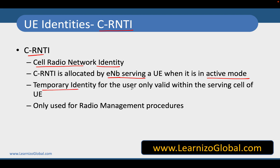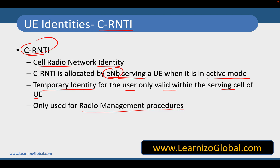C-RNTI is a temporary identity for the user, valid only within the serving cell of the UE. This identity is used for all radio management procedures. It is allocated by the serving eNodeB, and as soon as you move to idle mode, this identity is released. It is valid only for radio management procedures.